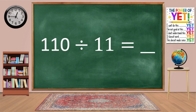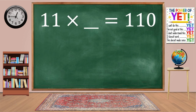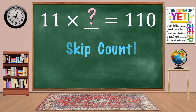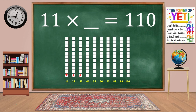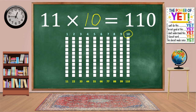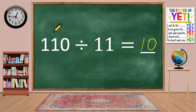110 divided by 11 equals blank. Our related fact is 11 times what equals 110? Skip count: 11, 22, 33, 44, 55, 66, 77, 88, 99, 110. We have 10 columns. 11 times 10 equals 110. 110 divided by 11 equals 10.